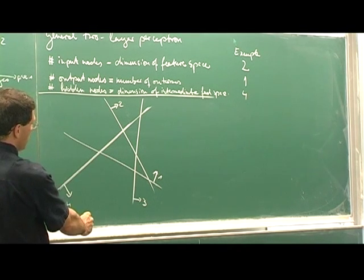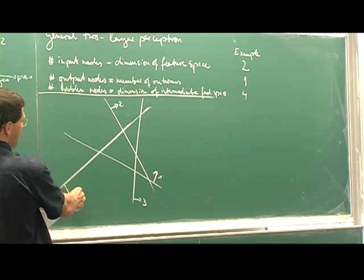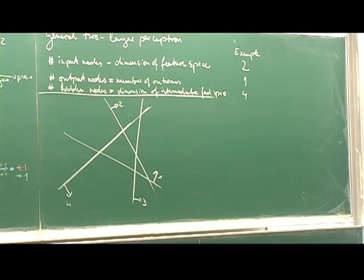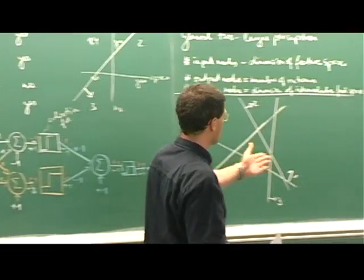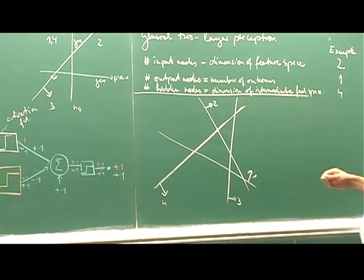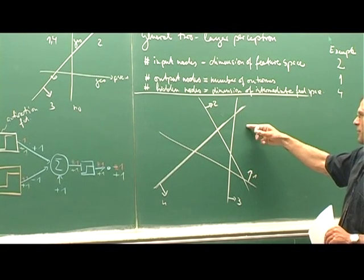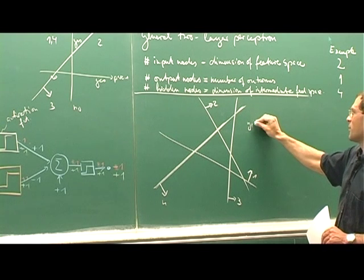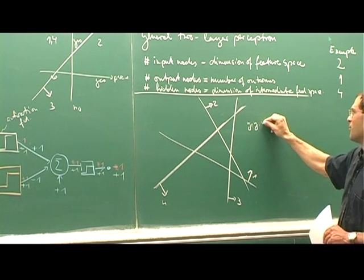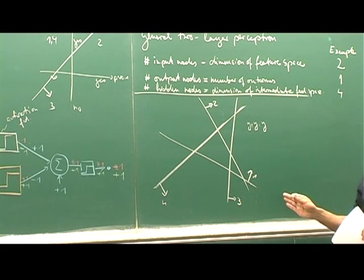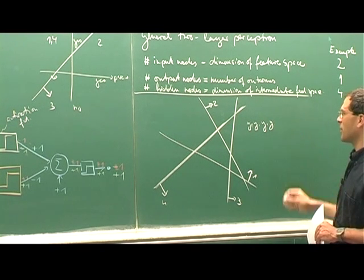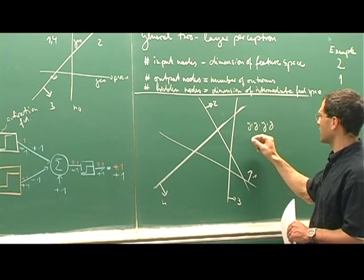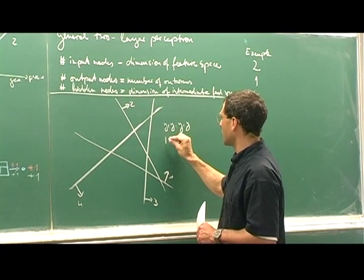With four perceptrons, each area in the partitioned feature space receives a binary code based on which perceptrons it lies above. For instance, one area might be above all four perceptrons: coded 1,1,1,1. Another area lies above all except perceptron 3: coded 1,1,0,1. Another is above all except perceptron 2: coded 1,0,1,1. Each distinct region gets a unique four-bit binary label.